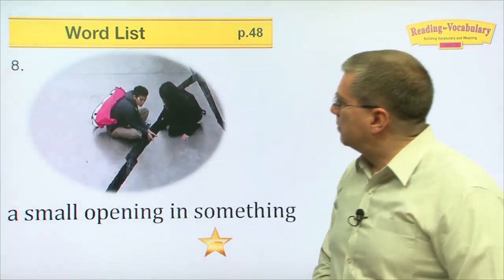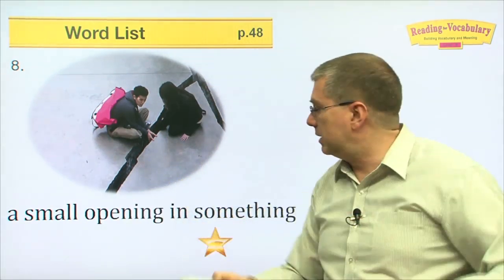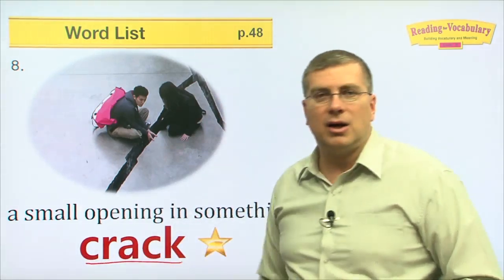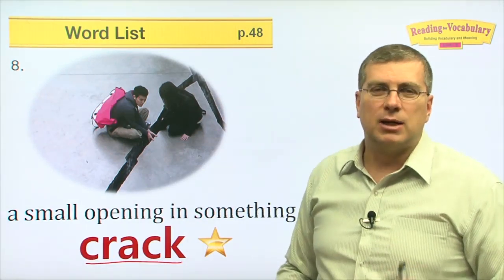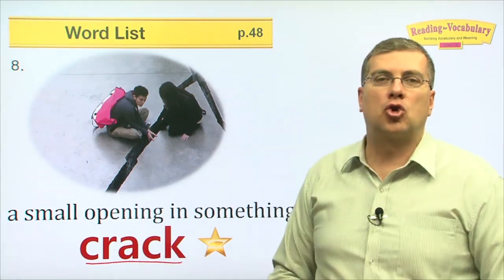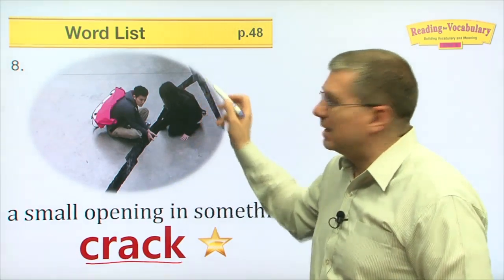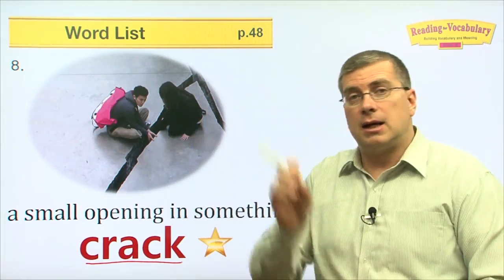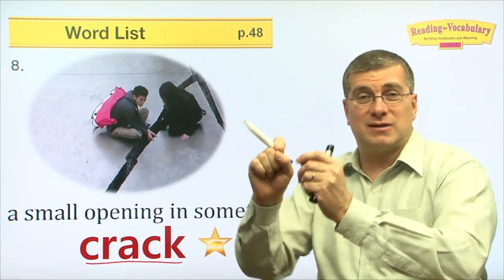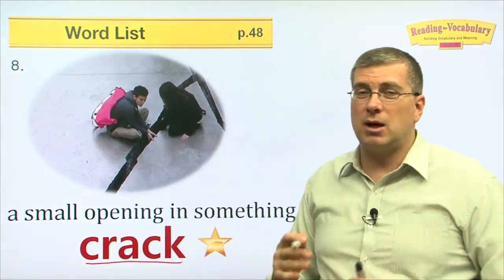Number eight — looks like some earthquake came through and made small openings in something. We call this a crack. When you see a small opening, especially in stone or even metal — a little opening that looks like it might break soon — you see cracks. If you see cracks, be careful, because that means something might break. It got weak somehow. So if you see a crack, be careful — it's not strong anymore.